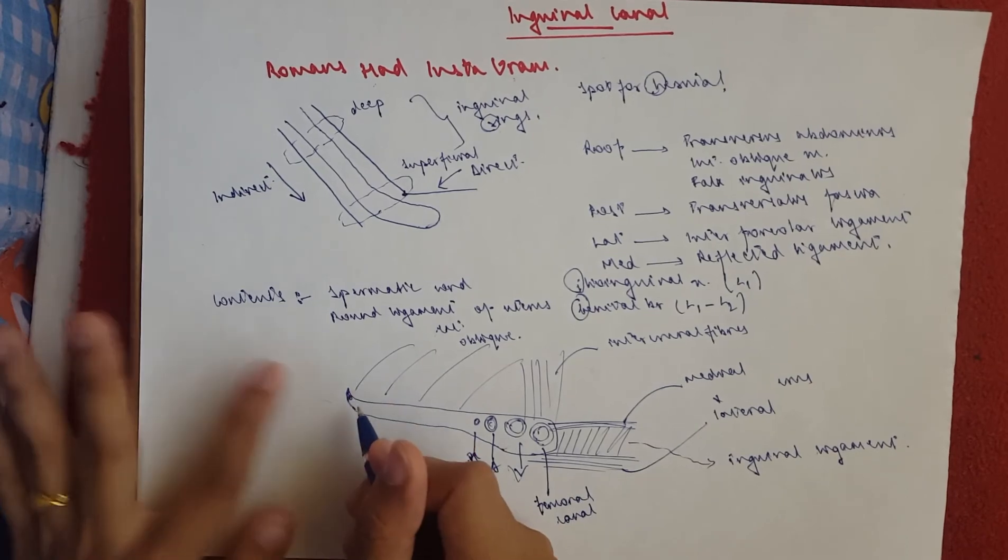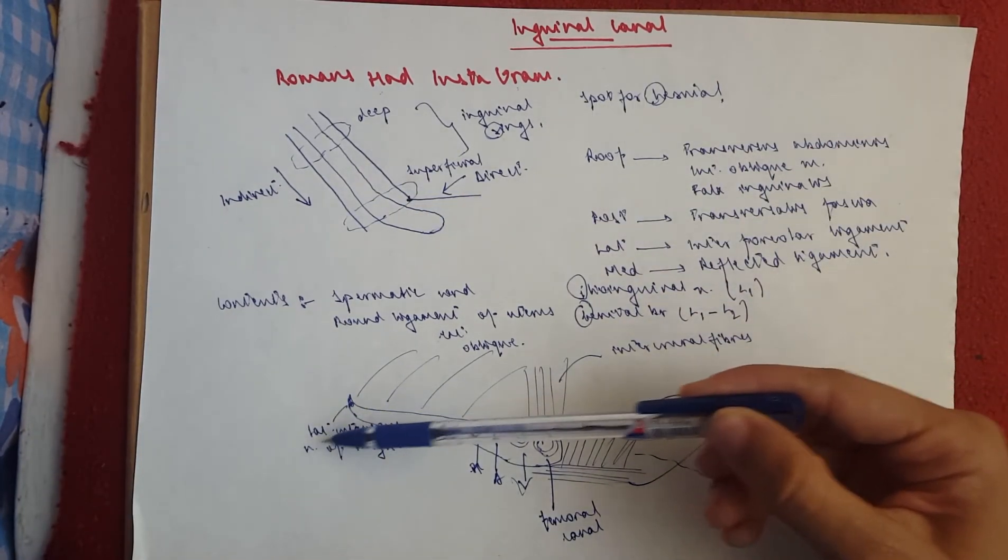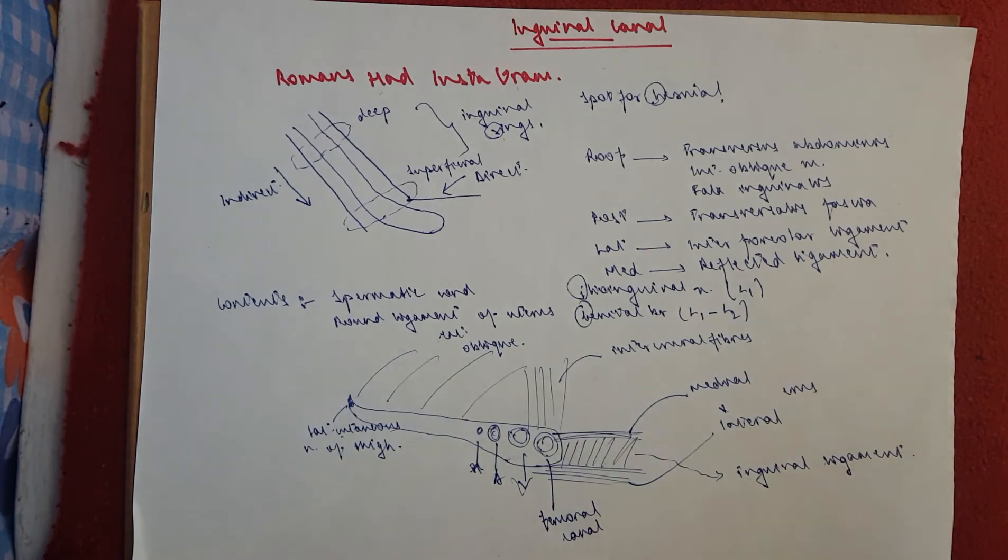And here, if you want to know, here would be the lateral cutaneous nerve of the thigh, which is also in the lumbar plexus.